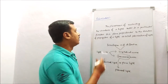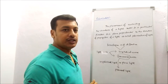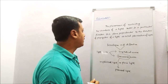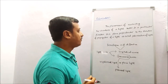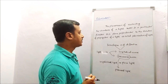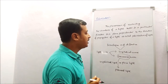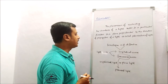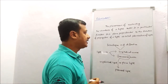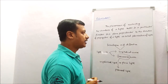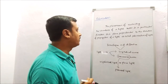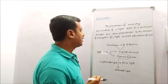So what is polarization? The phenomenon of restricting the vibration of a light vector in a particular direction in a plane perpendicular to the direction of propagation of light is called polarization of light.